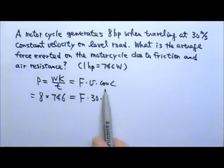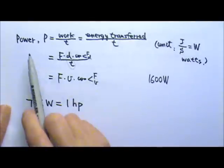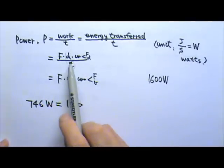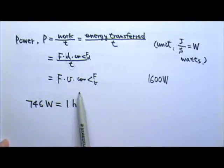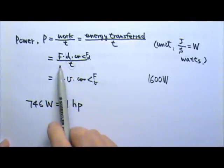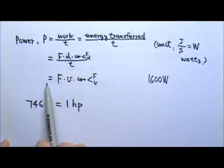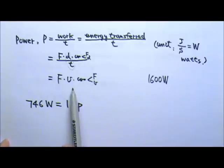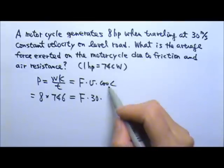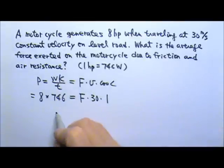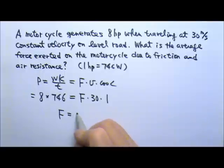Now for the cosine part. In most of the power problems, the cosine part is 1, because in most of these problems, the force and the displacement or the force and the velocity are in the same direction. So this cosine is 1 and therefore we'll get the force to be 199 newtons.